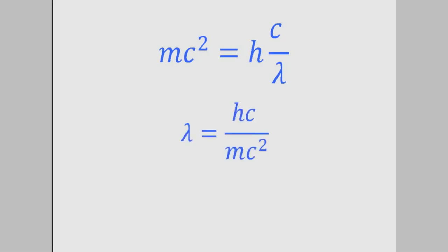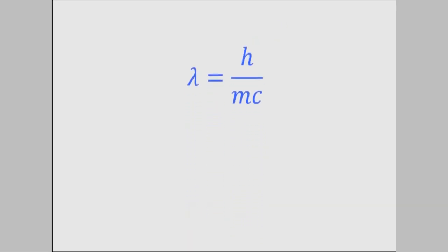When we do, here's what we get. And now we can simplify that a bit by making one of the c's cancel out. And now one last thing. c stands for the speed of light. But Einstein showed that a particle with mass, like an electron,